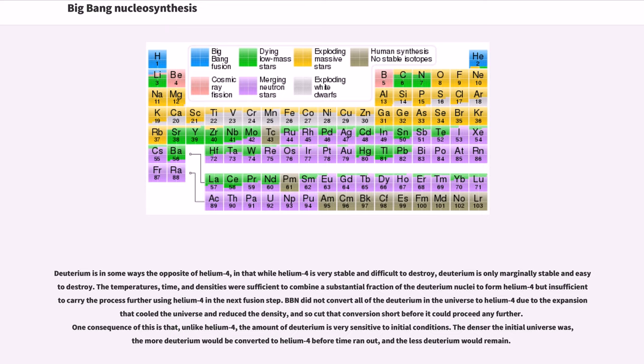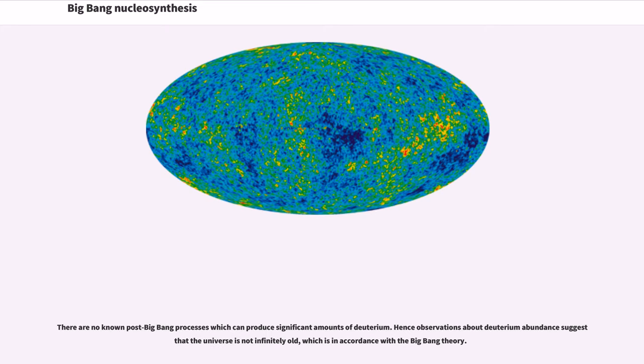The denser the initial universe was, the more deuterium would be converted to helium-4 before time ran out, and the less deuterium would remain. There are no known post-Big Bang processes which can produce significant amounts of deuterium. Hence observations about deuterium abundance suggest that the universe is not infinitely old, which is in accordance with the Big Bang theory.